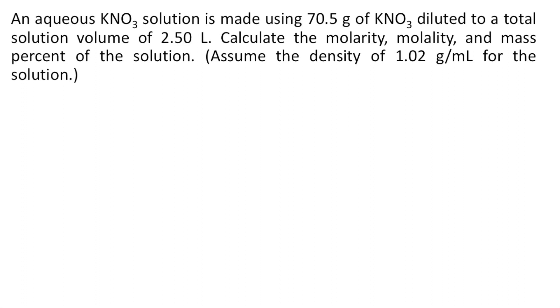An aqueous KNO3 solution is made using 70.5 grams of KNO3 diluted to a total solution volume of 2.50 liters. Calculate the molarity, molality, and mass percent of the solution. Assume the density of 1.02 grams per mL for the solution.